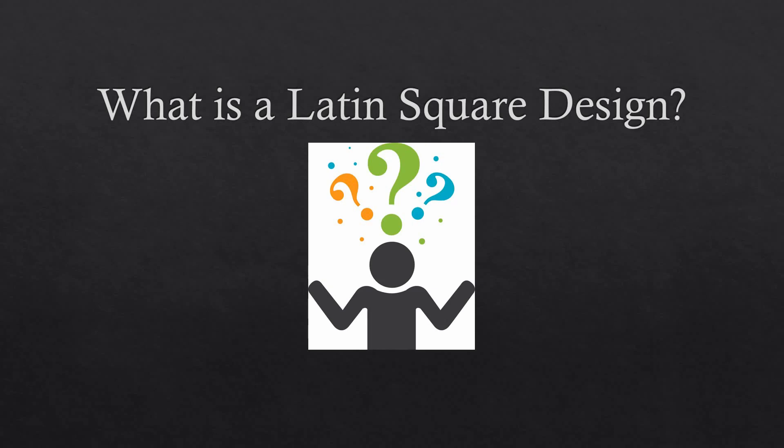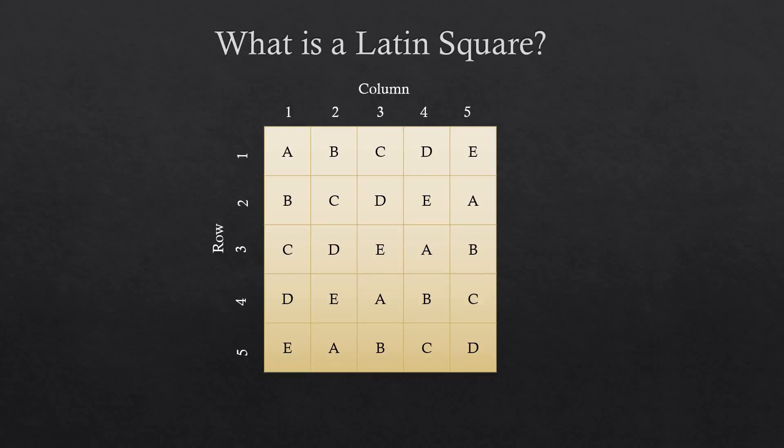You may ask yourself, what is a Latin square design? In simple terms, a Latin square design is a square array that is used in experimental design. The Latin square gets its name from the fact that we can write it as a square with Latin letters to correspond to the treatments. It is primarily used to ensure that only one variable is affecting the outcome of an experiment.